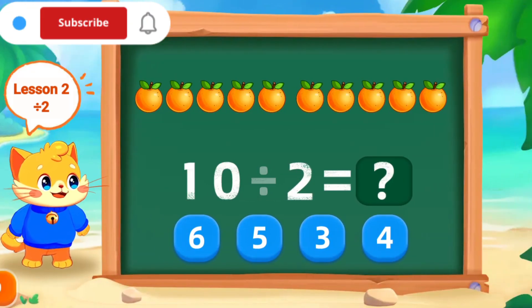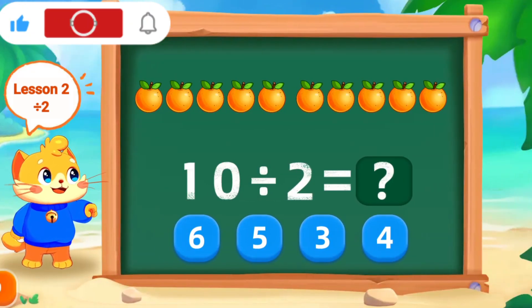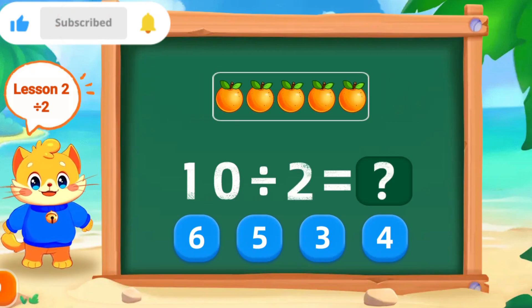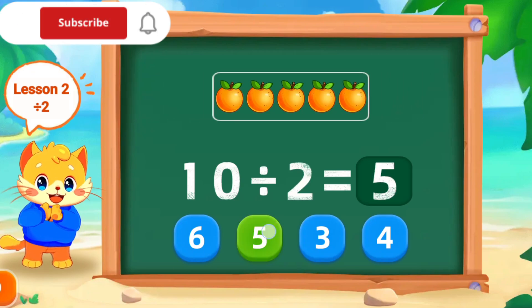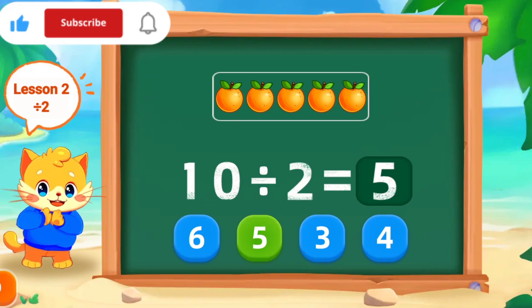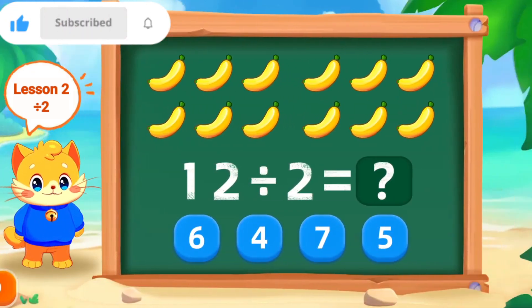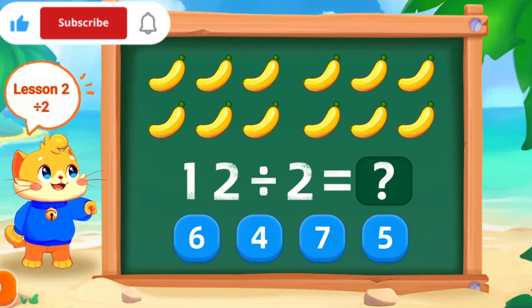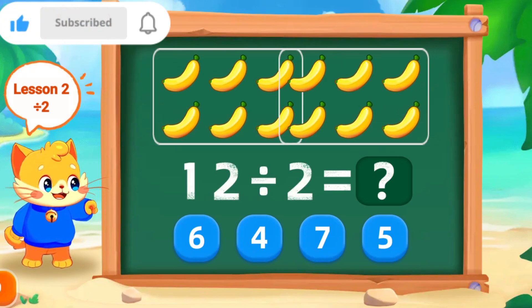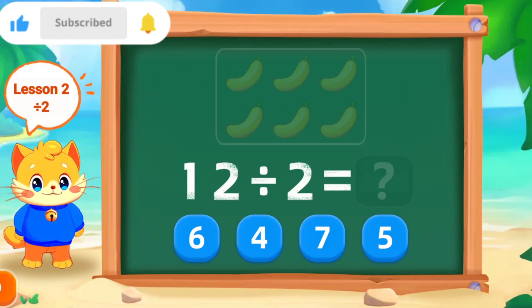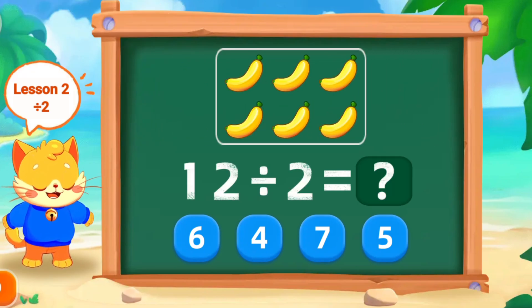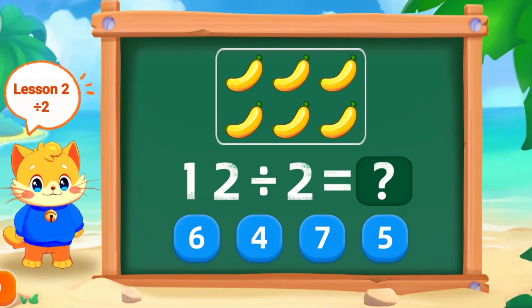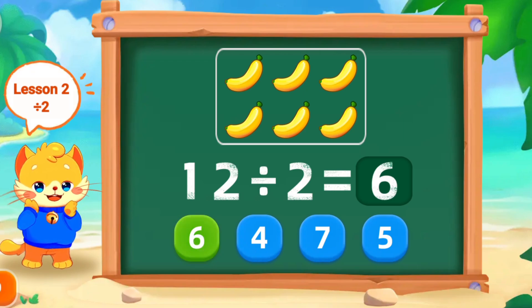10 divided by 2 is 5. Good work. 10 divided by 2 is 5. 12 divided by 2 is 6. Perfect.